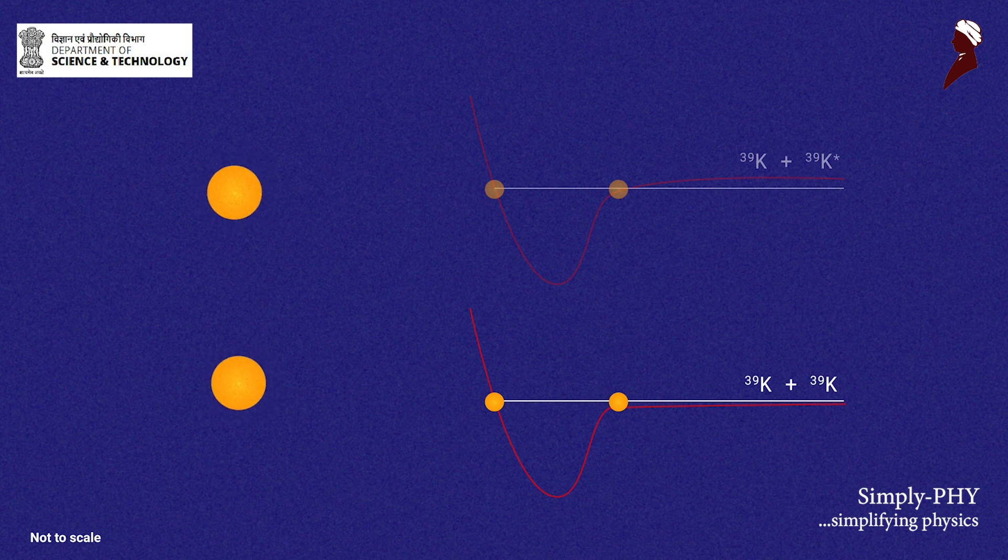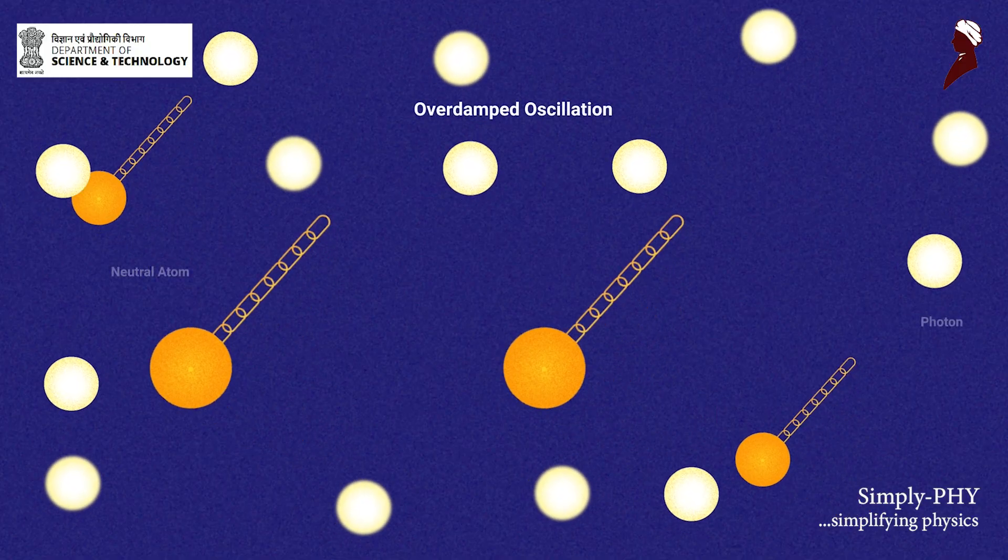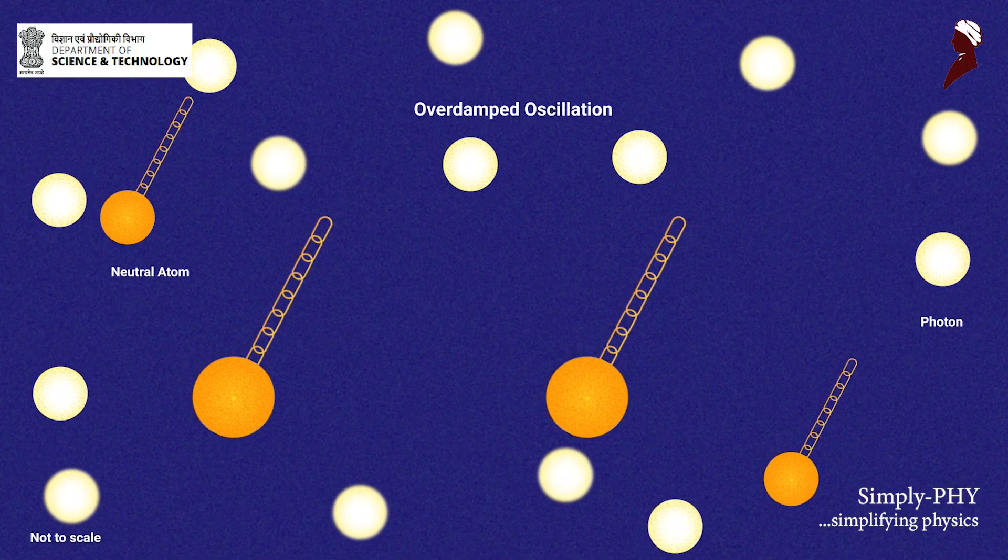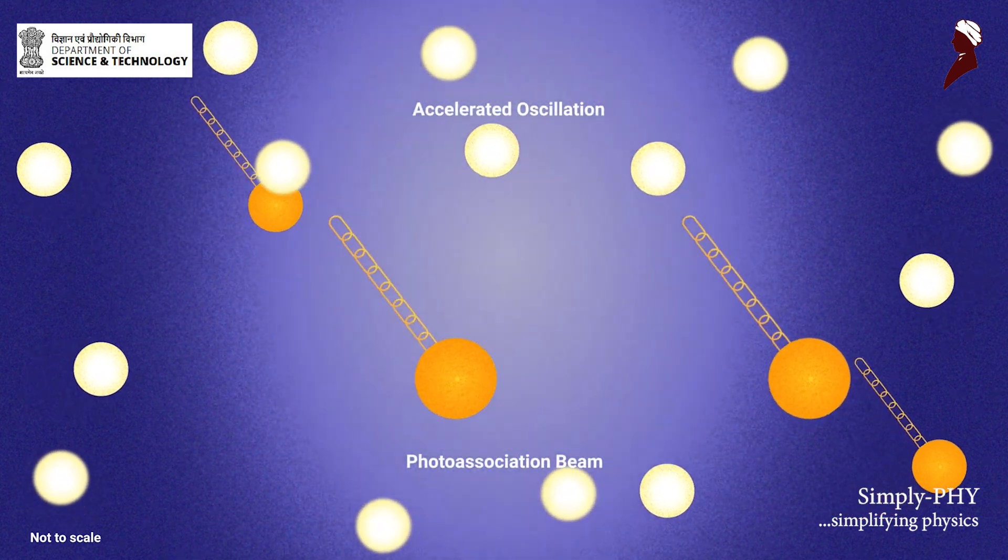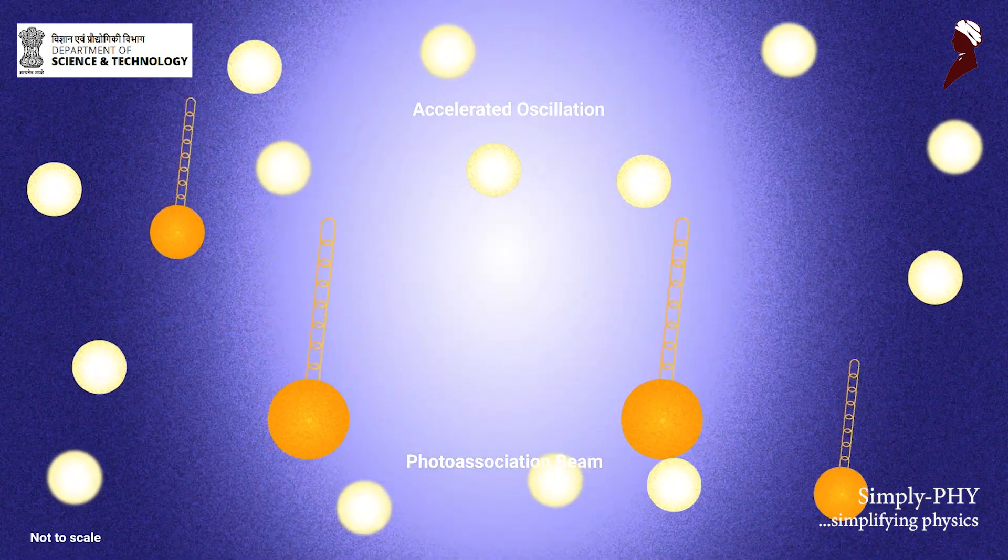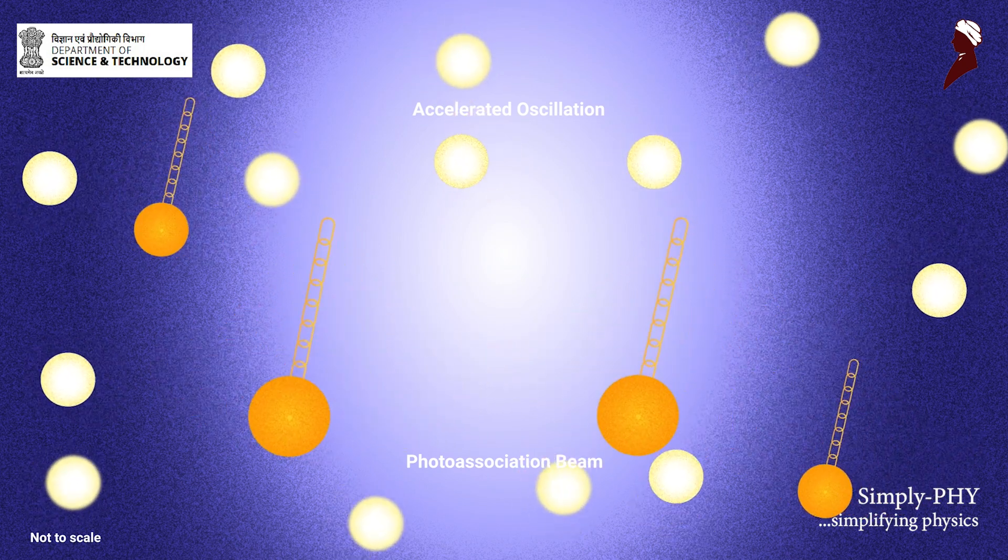The atoms can either leave the trap or can get recaptured. To our surprise, after tuning this interaction, we found that the motion becomes accelerated rather than damped, and this is happening because of a phenomenon called interatomic interaction tuned by the photons which are interacting between the atoms.